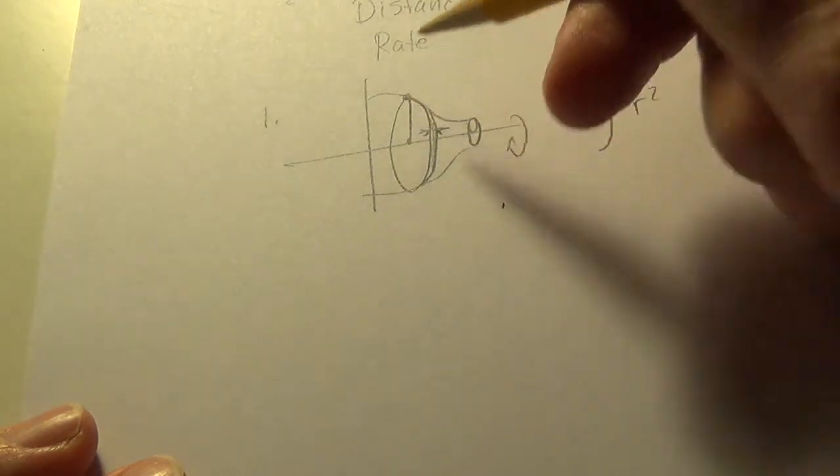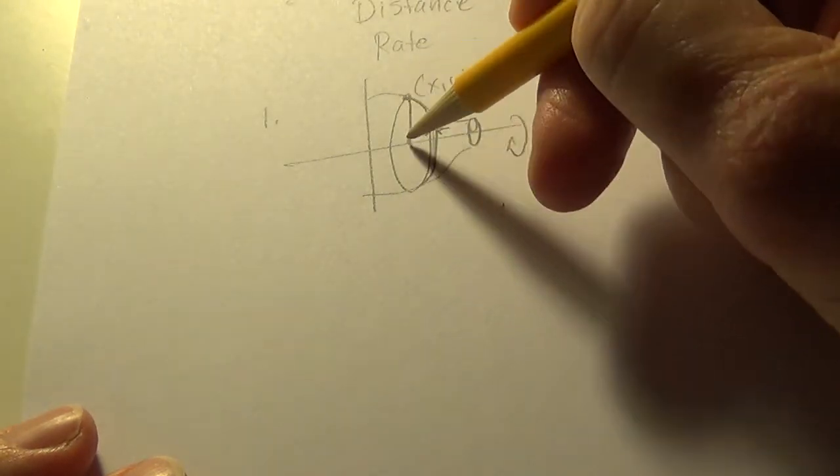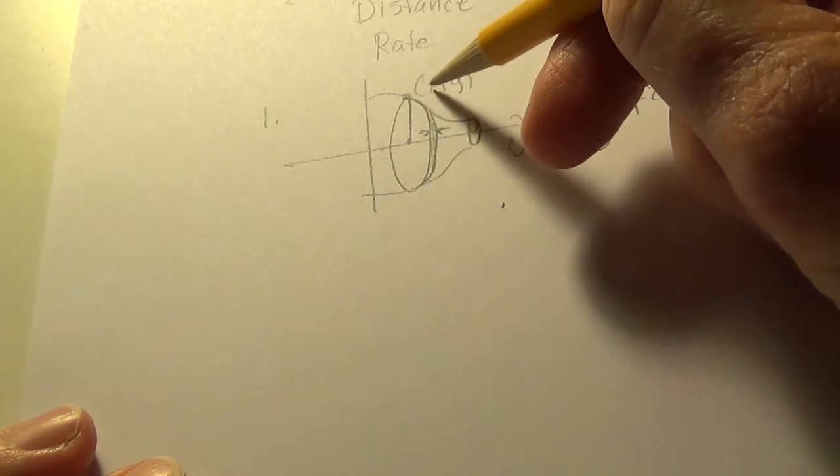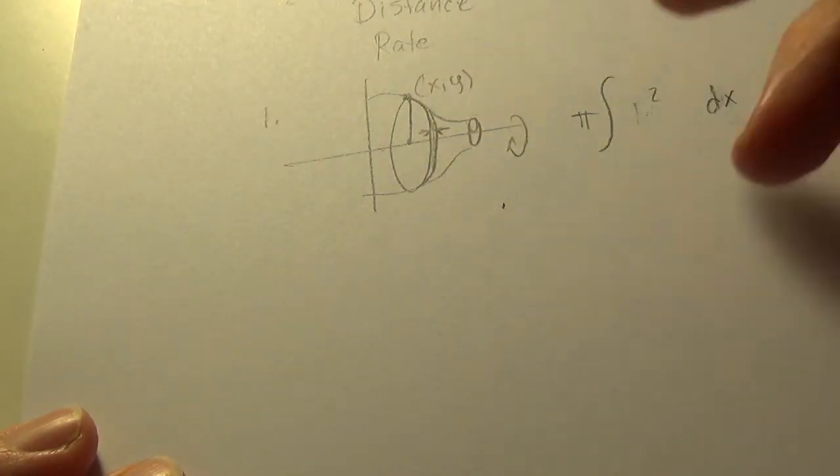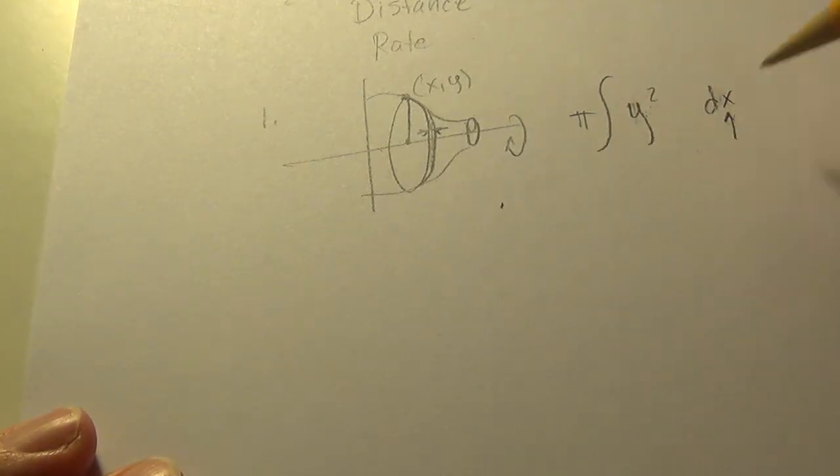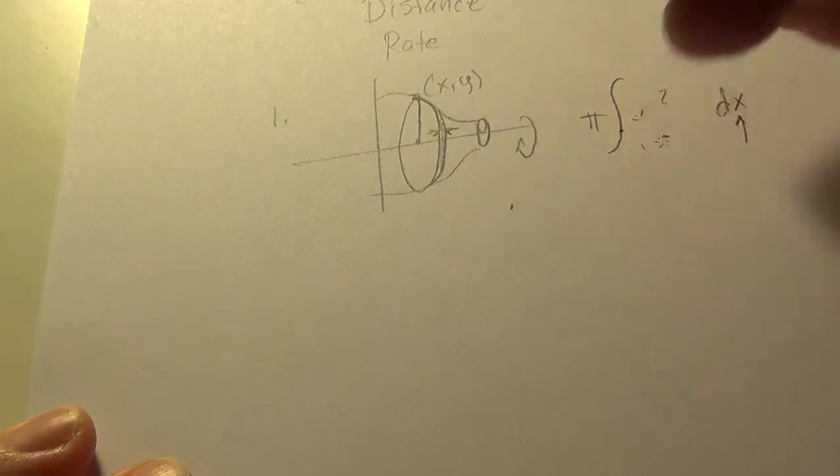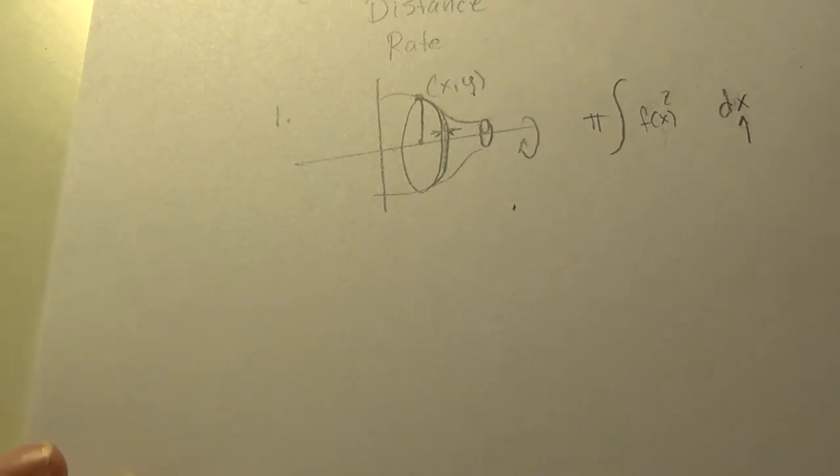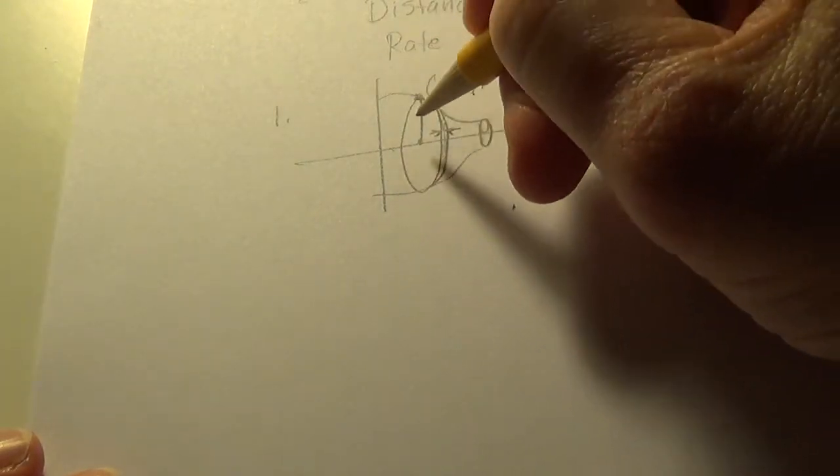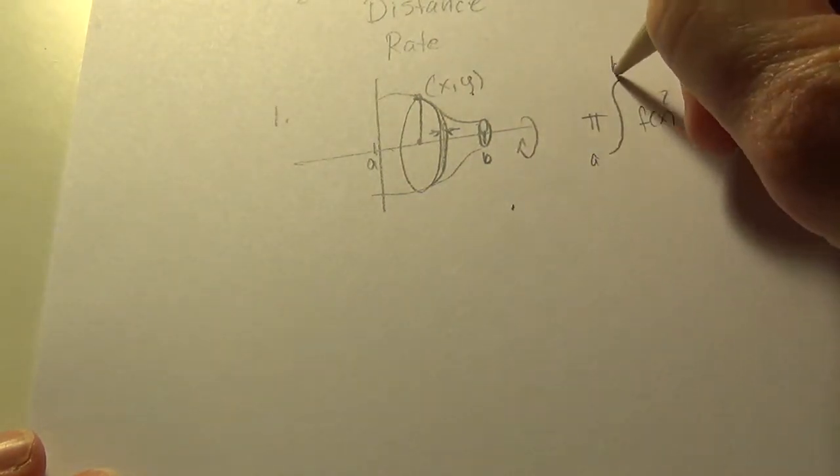But the r is related to the point xy on the original function, so the radius is the y, so we can replace r with y squared, but the variable of integration is x, so we have to look at the function and define it in terms of x, and there's always a way to do that, so we'll call it f of x. That's the theory, and these will add up from wherever the object starts to where it ends.